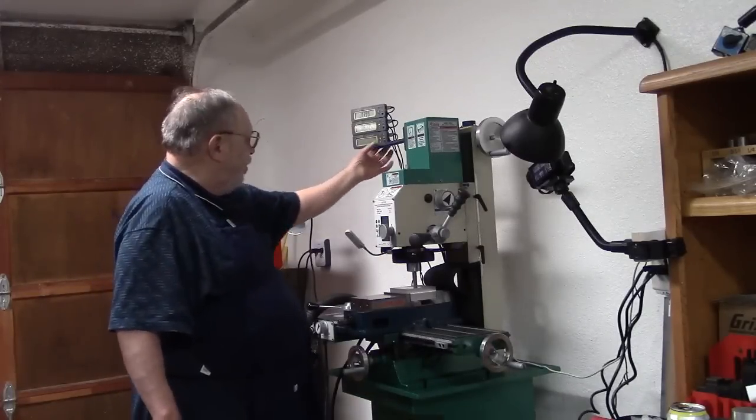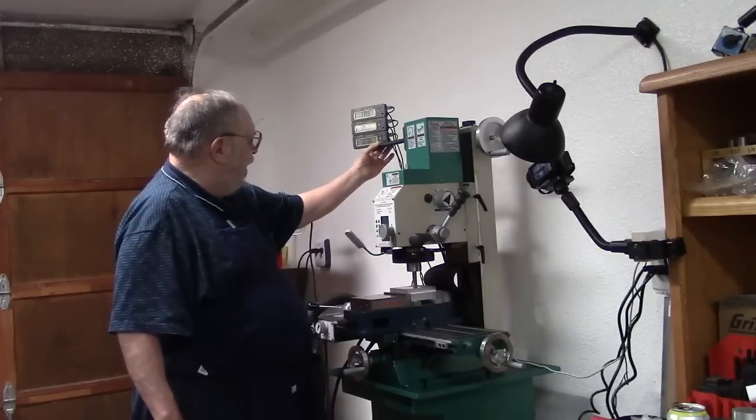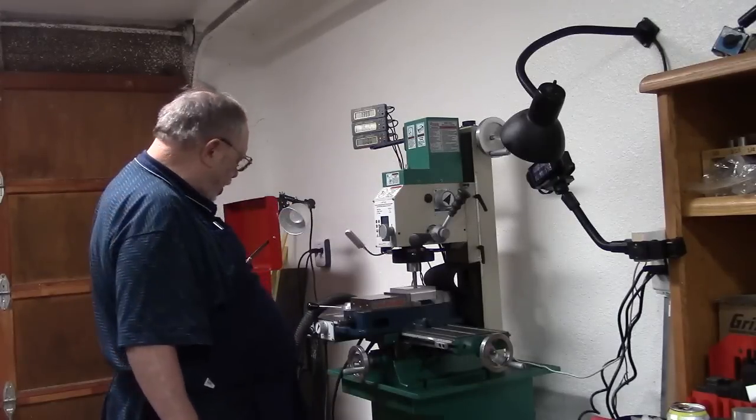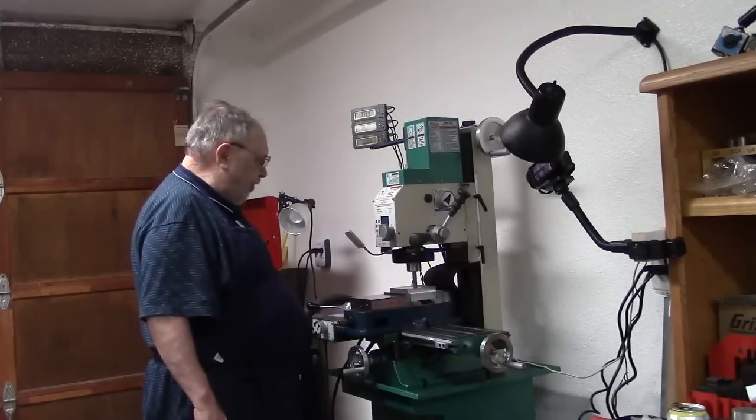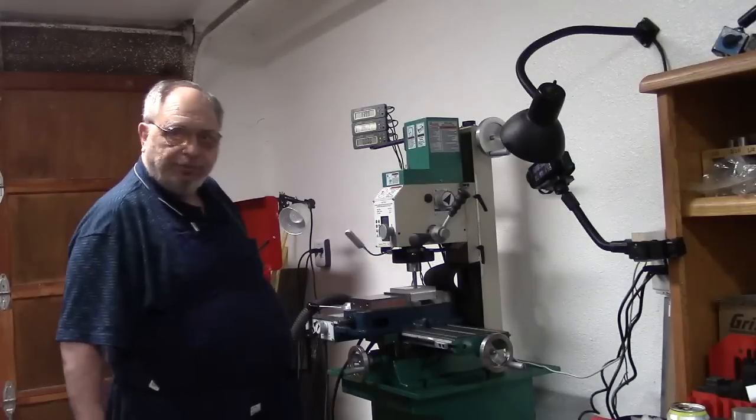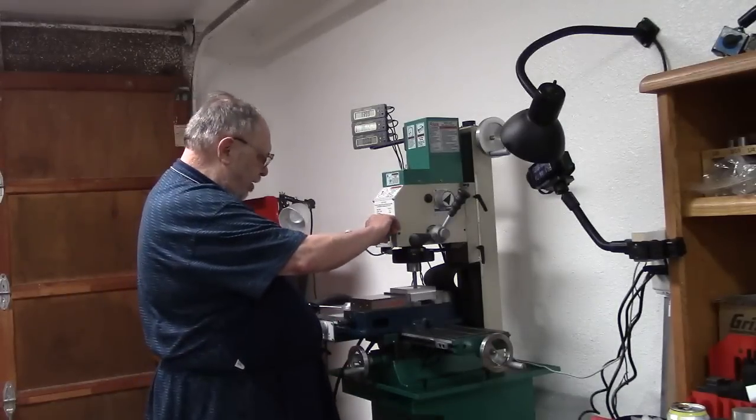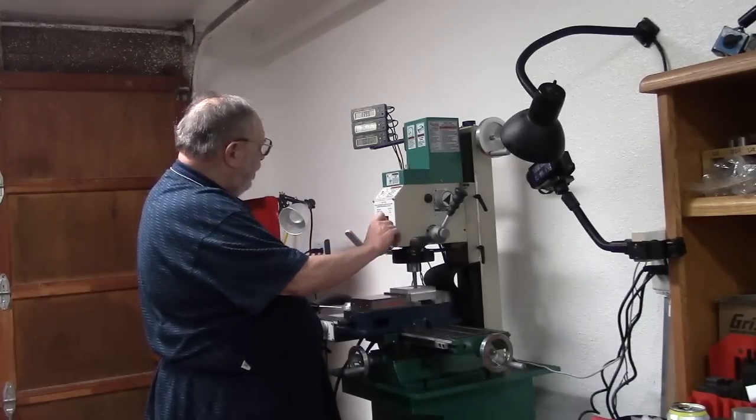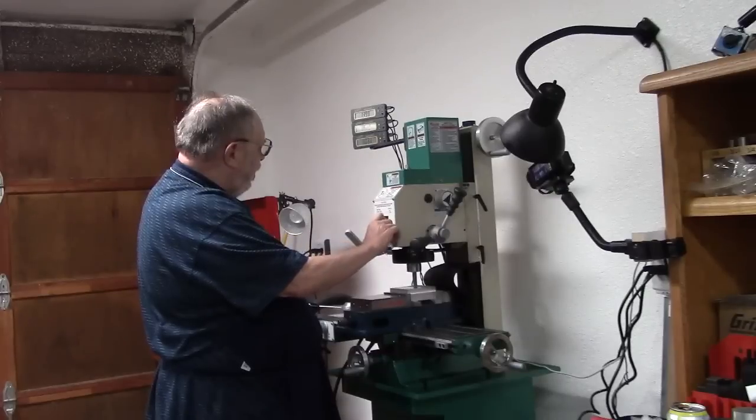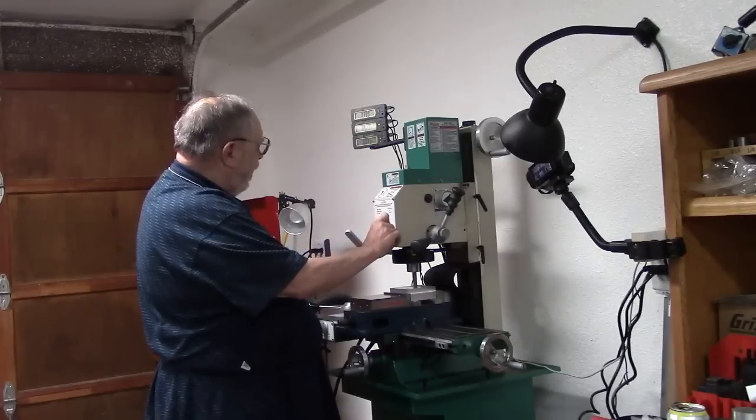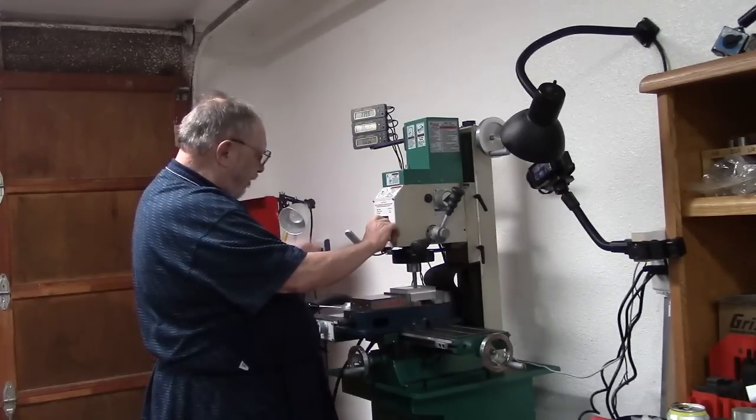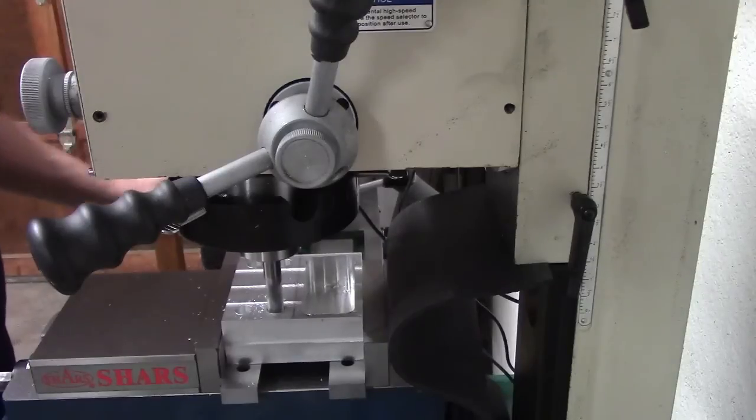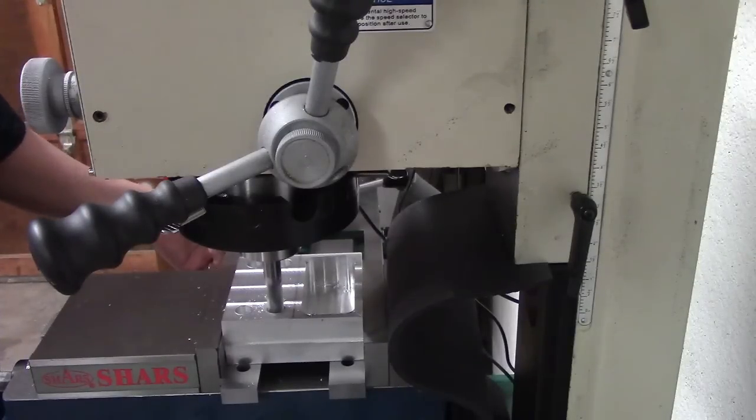And so I'll zero my Z axis now. Alright. So let's go in here. I'm going to try a 50 thousandths cut at 500 RPMs. Let me try here. Okay. So I have my 50 thousandths cut, roughly. Now we'll try that first and just see how this thing reacts to that.